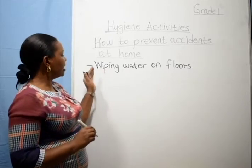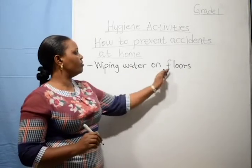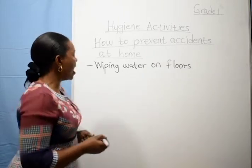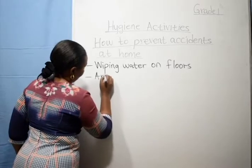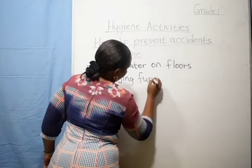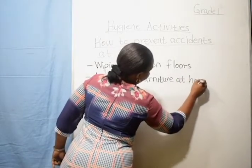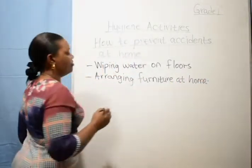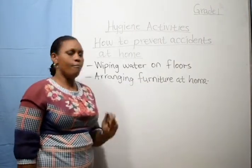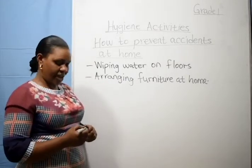You are supposed to prevent a fall by wiping water on the floors. Make sure you wipe the water on the floors so you don't fall down. You can also prevent a fall by arranging furniture at home. When furniture is disarranged, you can fall down and hurt your leg.